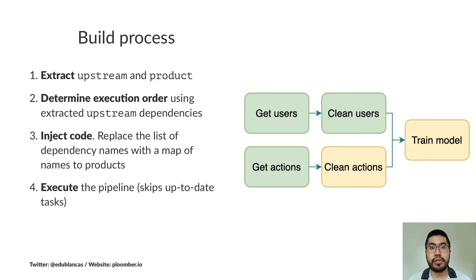Let's recap about the build process. The first step for building a pipeline in Plumber is that you have to extract the upstream and product variables. Plumber extracts those variables on each script for you. Then you have to determine execution order, and that's just assembling the pipeline in the right order so that you can execute dependencies first. Then we have to inject the code. We have to replace the list of dependency names that you want with the map that, given the name of the dependency, is going to give you the location of the files so you can use them as inputs. And finally, we execute the pipeline.